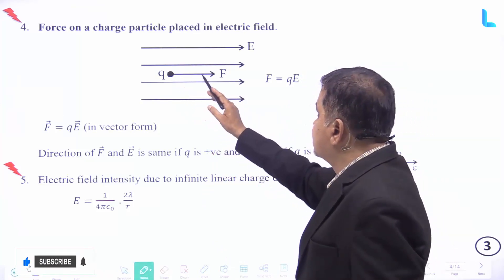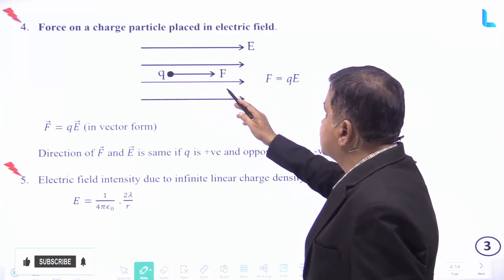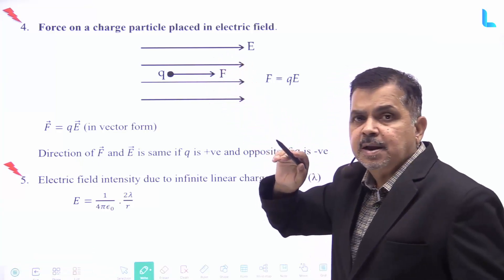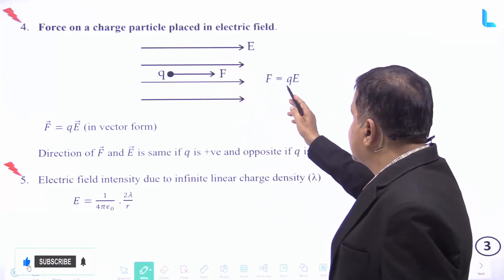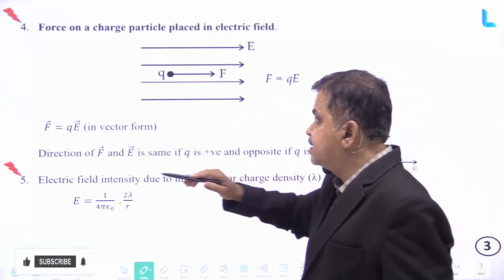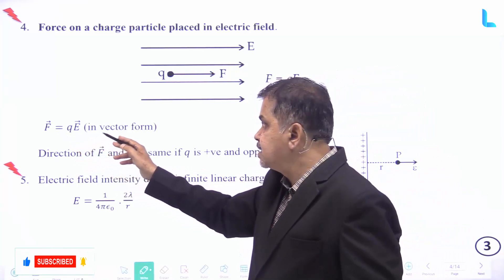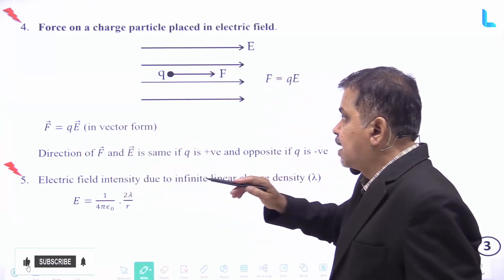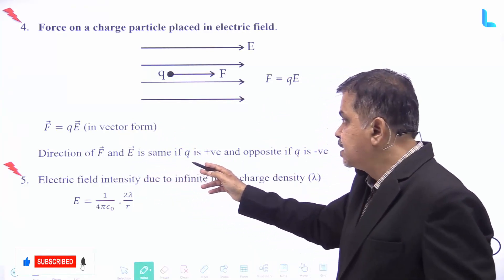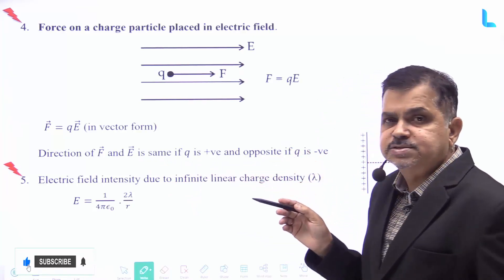The force on a charged particle placed in an electric field: a charged particle Q placed in electric field E gives force F equal to Q into E, or in vector form, vector F equal to Q into vector E. Note that the direction of F and E is the same if Q is positive, and opposite if Q is negative.